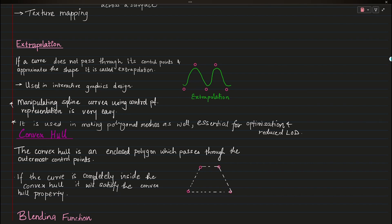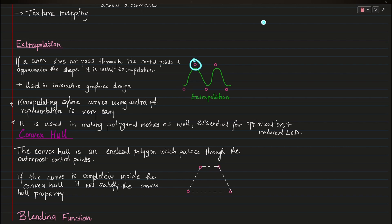Moving on to extrapolation. In extrapolation, the curve doesn't actually pass through the control points — it approximates the shape based on them. So if a curve does not pass through its control points and it approximates the shape, it's called extrapolation. This is actually a bit more efficient than interpolating.